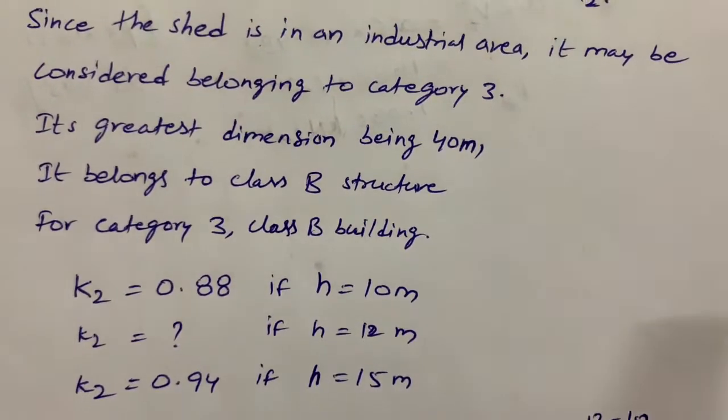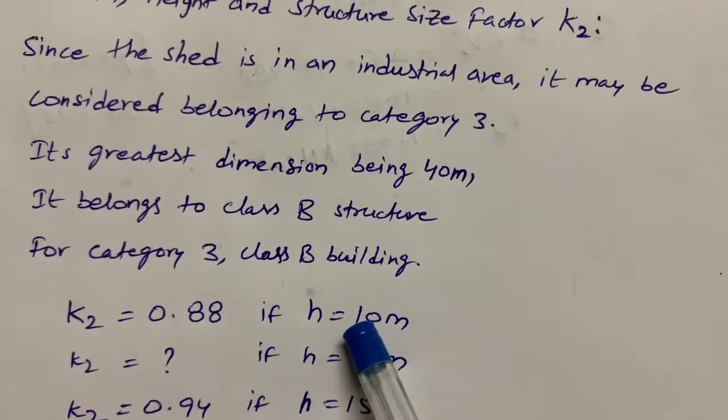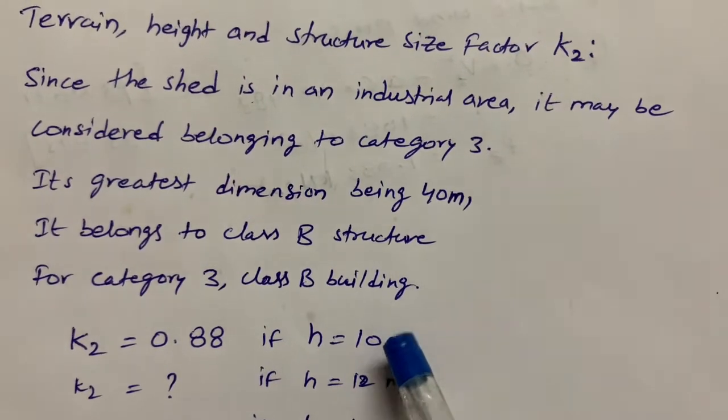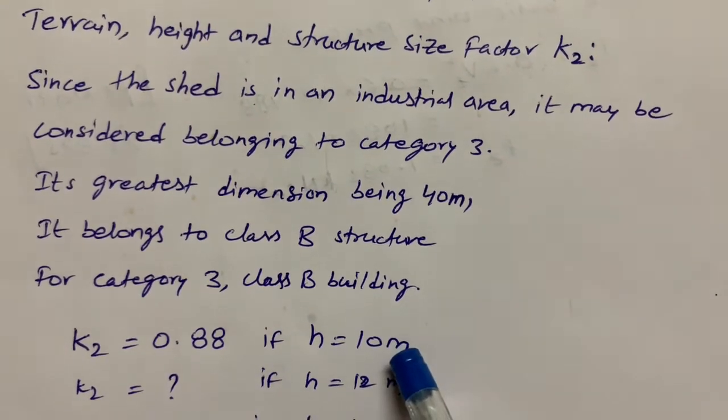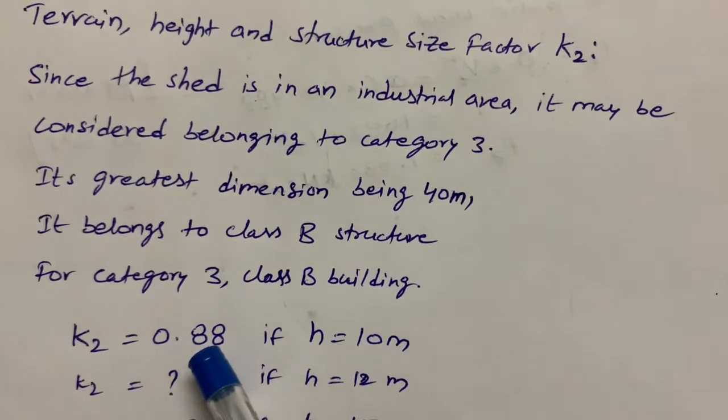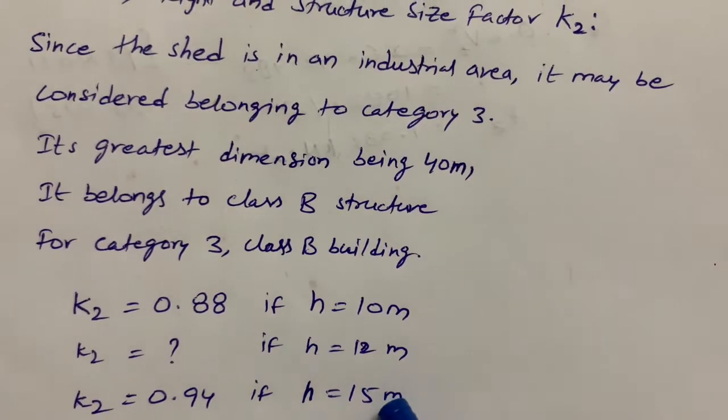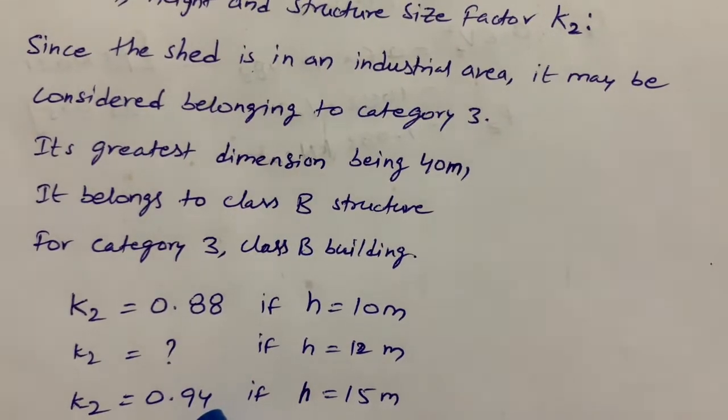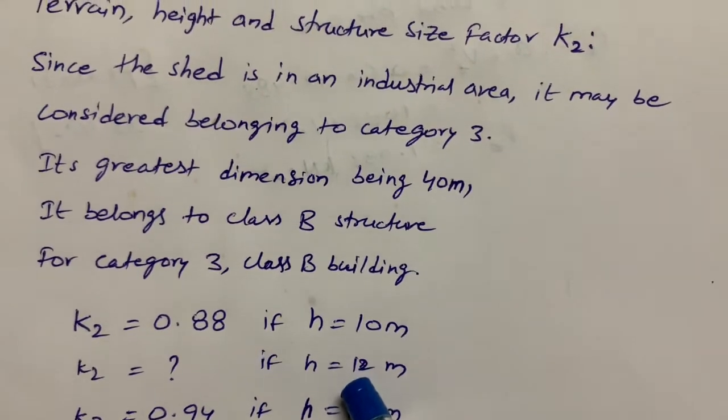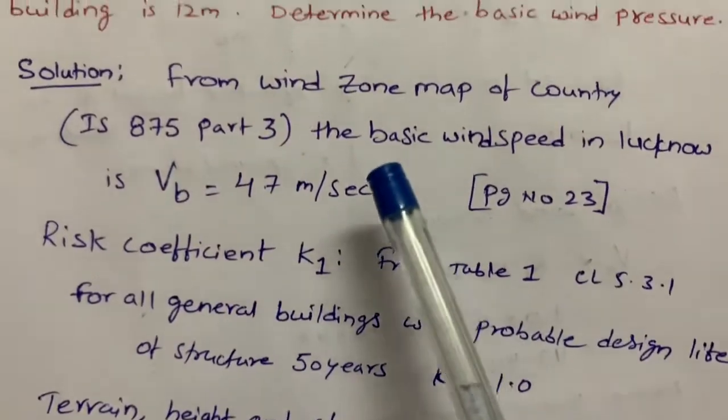If h = 10 meters, the K2 value is 0.88. If h = 15 meters, the K2 value is 0.94. But here the height of the building is 12 meters.